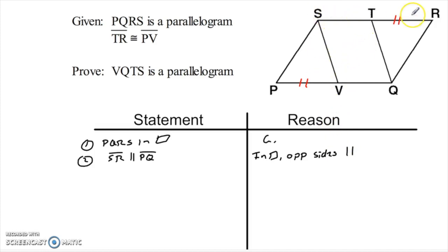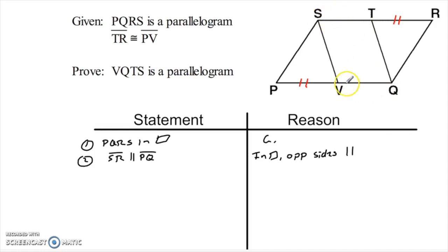But I don't really want SR parallel to PQ — what I really need is something about ST and VQ. If SR is parallel to PQ, then ST and VQ also have to be parallel, because they're just parts of the same lines — same slope, same direction. So in the next step I'll say ST is parallel to VQ.